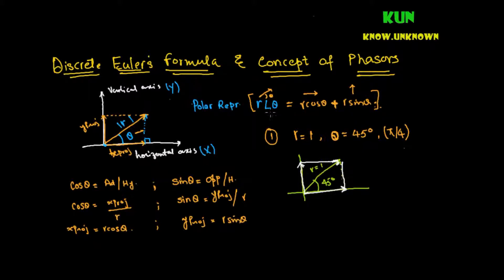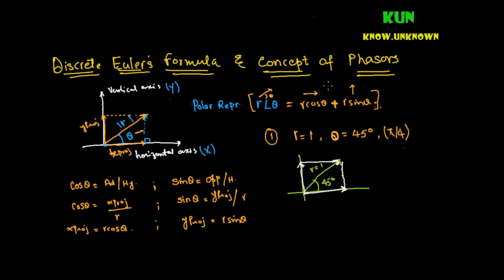This confirms that projecting a vector into two dimensions and converting back to polar form works in both directions. However, a problem remains: in mathematics, when these two terms are added, they simply add numerically, and it's not clear that they are perpendicular to each other. That ambiguity will be resolved by Euler's formula, which we'll cover in the next video along with decomposing it into time and frequency.